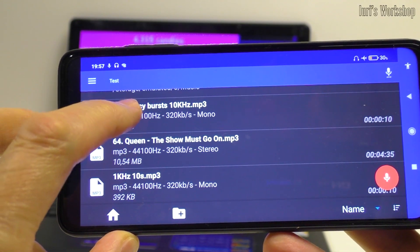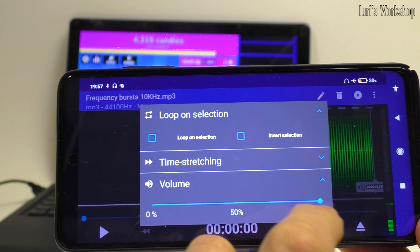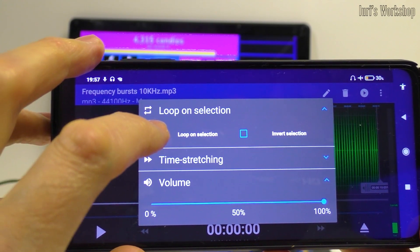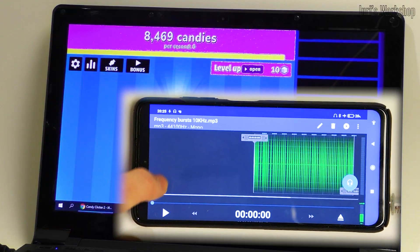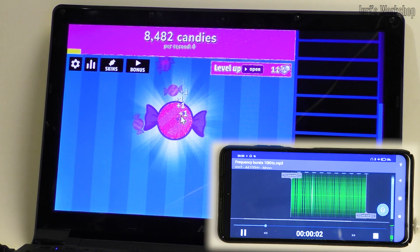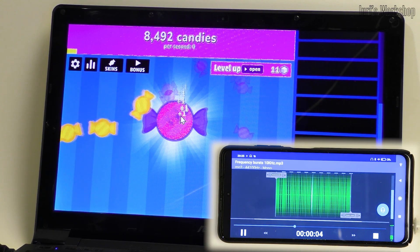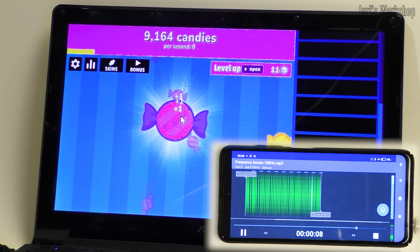As a signal source, you can use one of the ready-made audio files with recording of frequency parcels. In the player, you need to loop the playback. That's how it works.